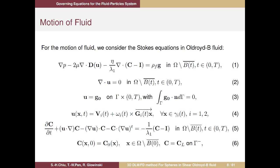Equation four is the no-slip condition, where X is a point on the surface of the particle. Since Gi is the center of mass, Gi X is a vector outward from the particle. Equation five is the constitutive equation for the conformation tensor C. This describes the motion of fluid. The domain does not include the particle region B — so far we haven't specified anything about the particle itself.